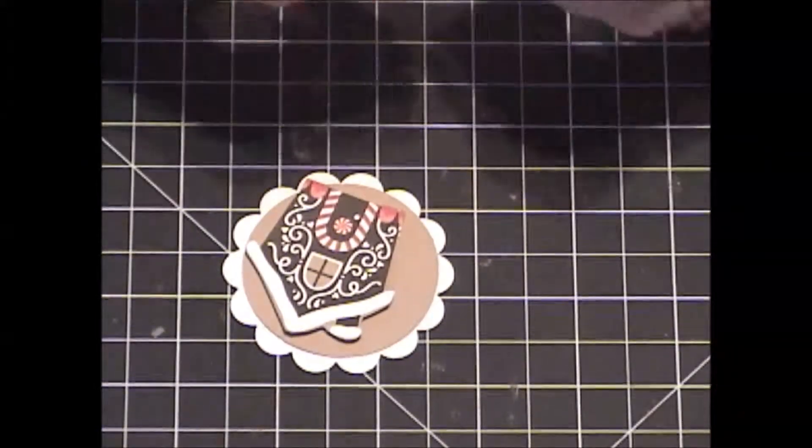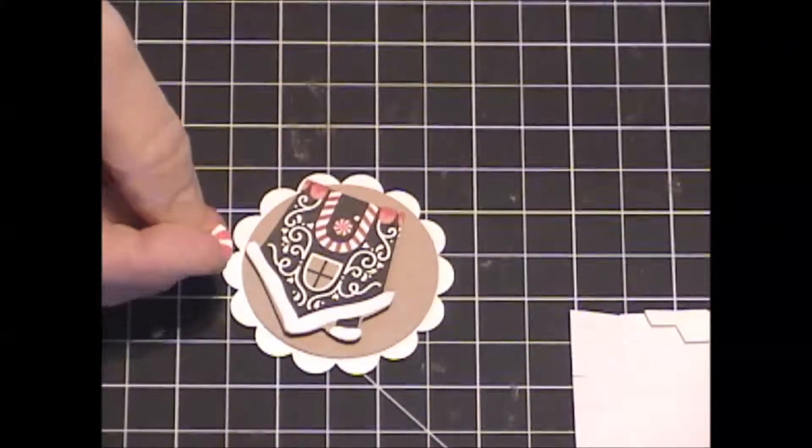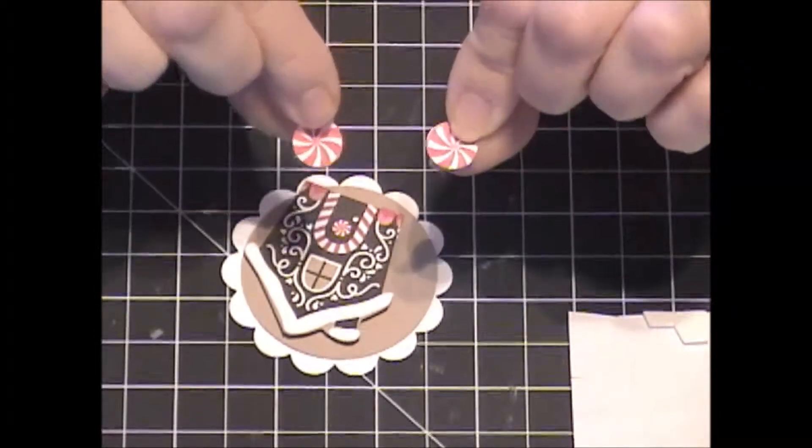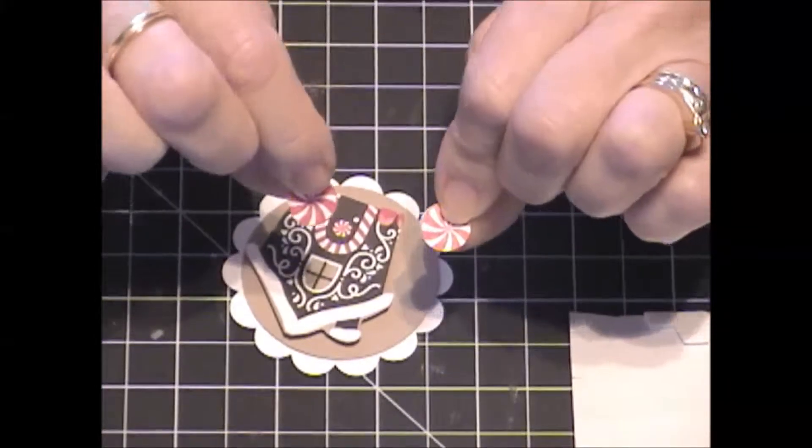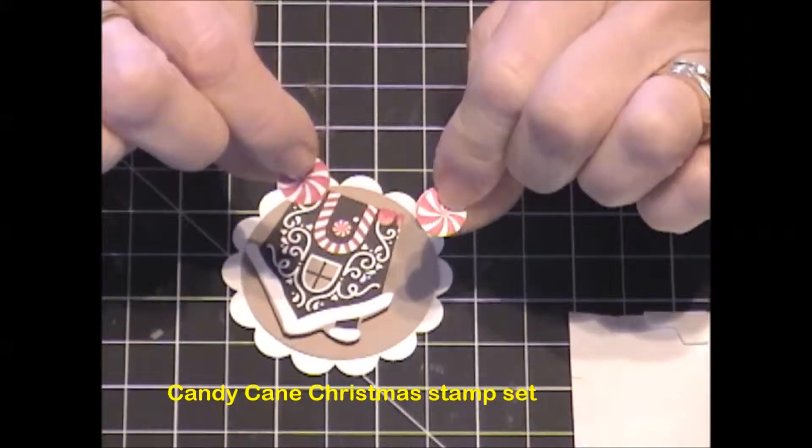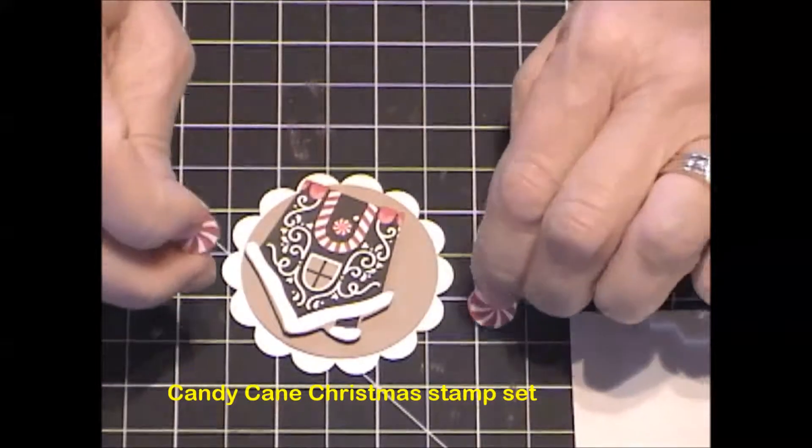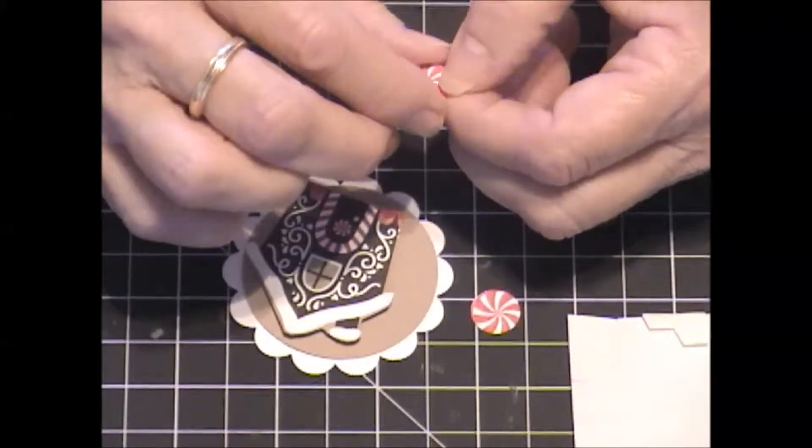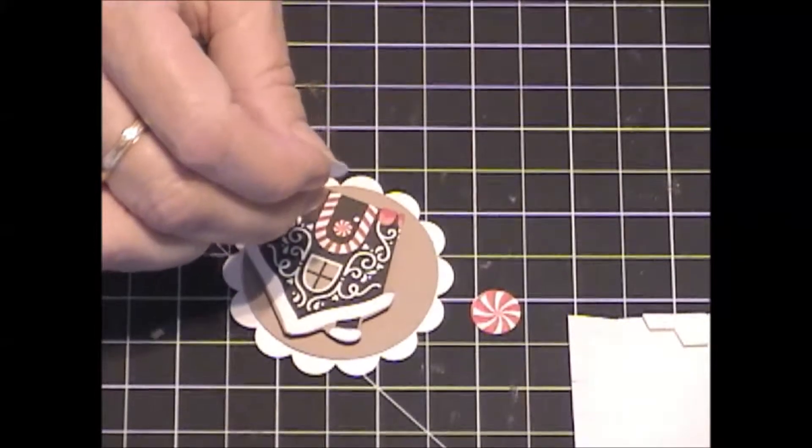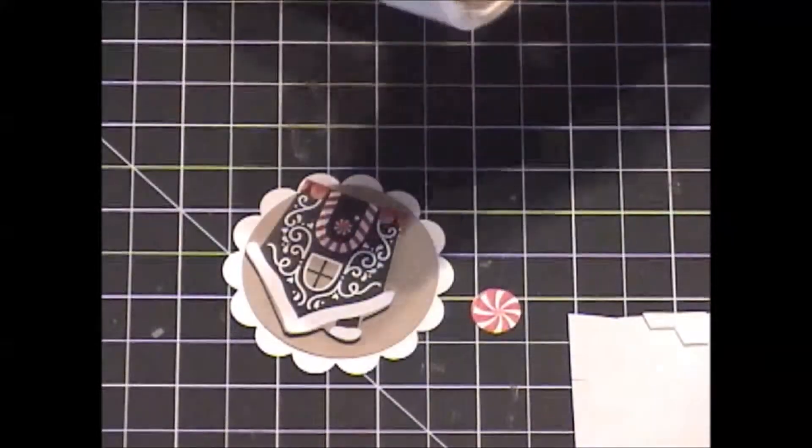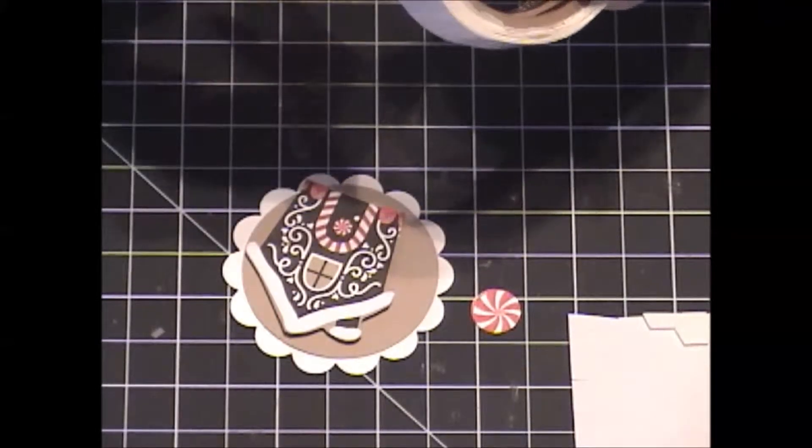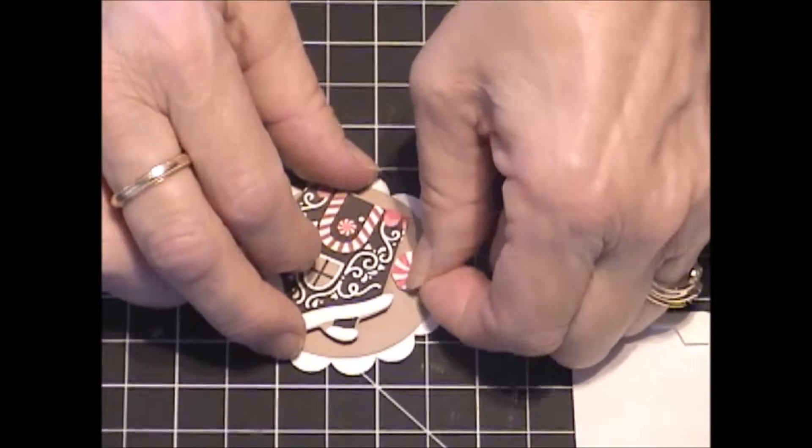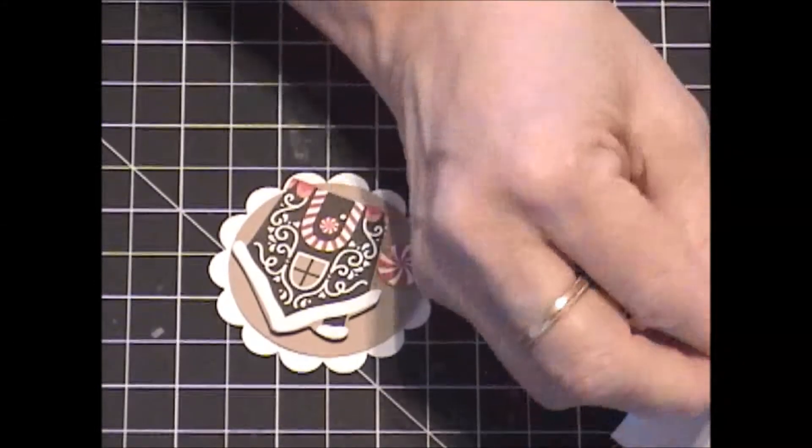And then also I have some little Starlight mints that I punched out. These are from the Candy Cane Lane stamp set. And I'll have all the directions and supply information on my blog. I'm going to use a glue dot for one of these. I'll put that here and a dimensional for the other one.